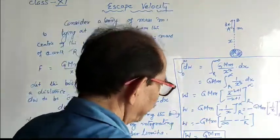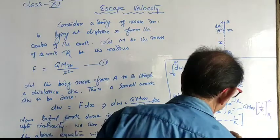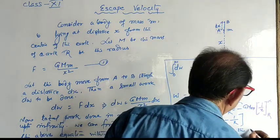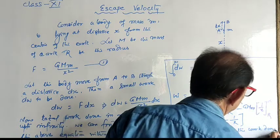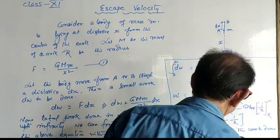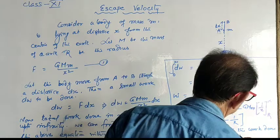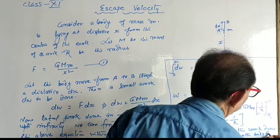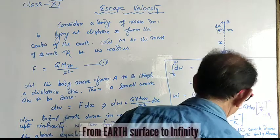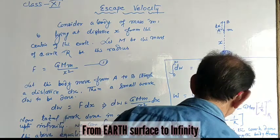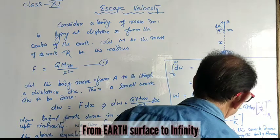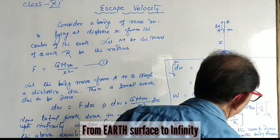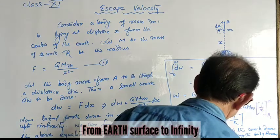This is the work done in raising the body from the Earth's surface to infinity: W equals GMm divided by R.